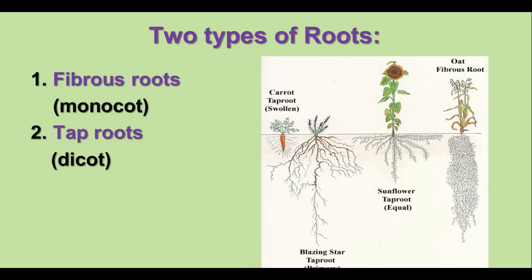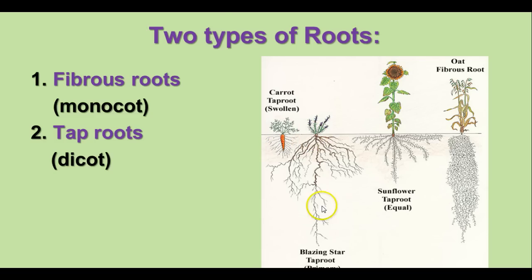There are two main kinds of roots found in plants: fibrous roots and tap roots. We generally find fibrous roots in monocots, which is one of the main kinds of flowering plants. Fibrous roots have lots and lots of tiny little branches with no one main branch. Tap roots are generally found in dicots, the other group of flowering plants. Here you can see an example of a swollen tap root in a carrot, or a primary tap root in a blazing star.